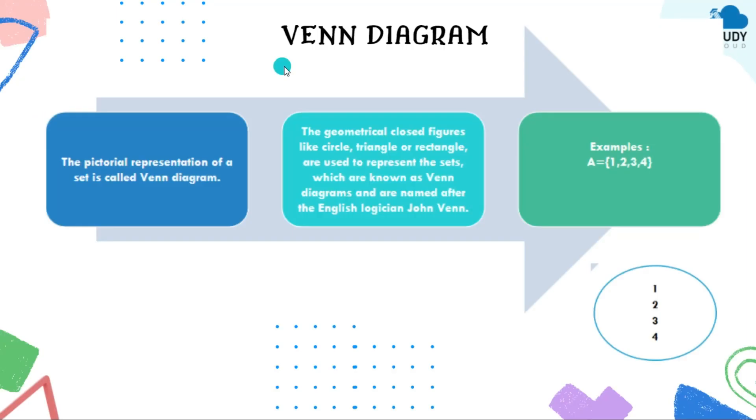Then third is Venn diagram. The pictorial representation of a set is called Venn diagram. Now when these sets are represented in a pictorial form, it could be in circle, triangle, or rectangle - that is known as Venn diagram.